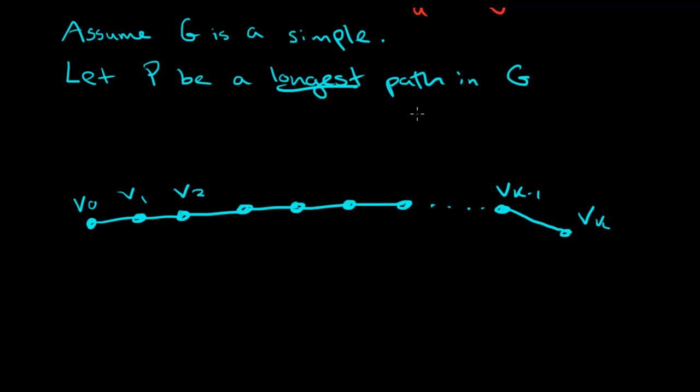It might not be unique. Maybe there's more than one, but that doesn't matter. We're going to take P to be a longest path. So let's write this out. P is the path that goes from vertex V0, V1, V2, all the way up to Vk minus 1, Vk. So, so far, all we've done is we've said we have a finite graph, so there is a longest path. And then we just drew it for our own sake.